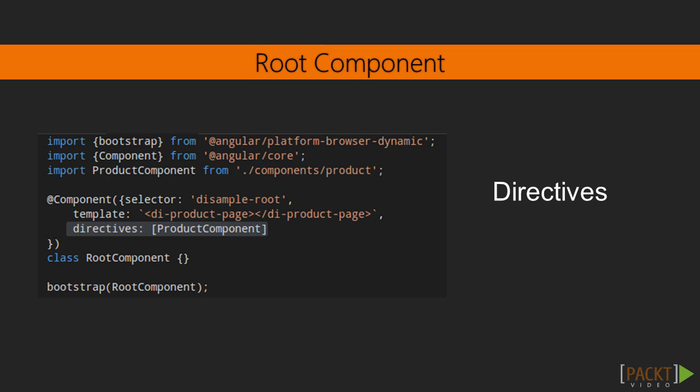Now let's talk about directives. A component is a good example of a directive with a template. There are two kinds of directives in Angular 2: structural and attribute directives. Structural directives modify the structure or layout of the DOM. Attribute directives alter the behavior of elements. Examples include ngFor, ngIf, ngSwitch, ngModel, and so on. In this example, the product component is being used in the root component as a directive.